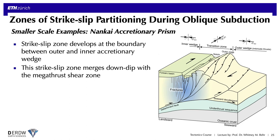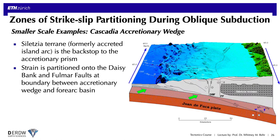These major strike-slip faults are thousands of kilometers long, but it's worth noting that strike-slip partitioning also occurs at the 100-kilometer scale within accretionary prisms. In the Nankai prism, a strike-slip fault defines the boundary between the outer and inner accretionary wedge and seismic imaging suggests it soles downward into the megathrust shear zone — illustrating the interplay between thrust faults and oblique slip. Similarly, the Cascadia accretionary wedge has a zone of strike-slip partitioning localized along its backstop, which is defined by a previously accreted island arc terrane, utilizing this pre-existing suture zone to partition oblique strain.